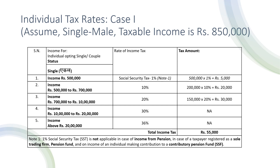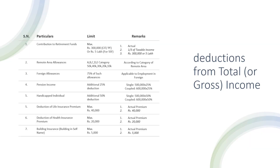Then ten percent on two lakh, which is twenty thousand. The remaining amount is eight lakh fifty thousand minus five lakh minus two lakh, which equals one lakh fifty thousand. On one lakh fifty thousand, you pay twenty percent, that is thirty thousand. So your total tax will be fifty-five thousand. However, if you are registered with the Social Security Fund, you don't have to pay that five thousand, so your tax will be only fifty thousand.